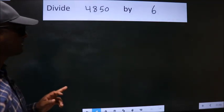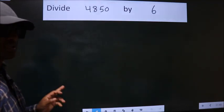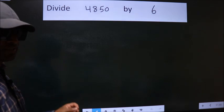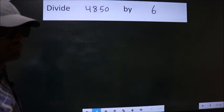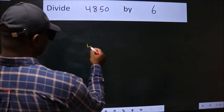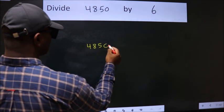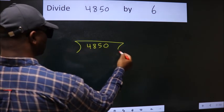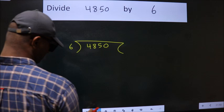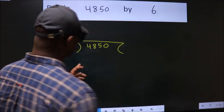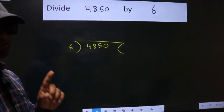Divide 4850 by 6. To do this division, we should frame it in this way. 4850 here, 6 here. This is your step 1.